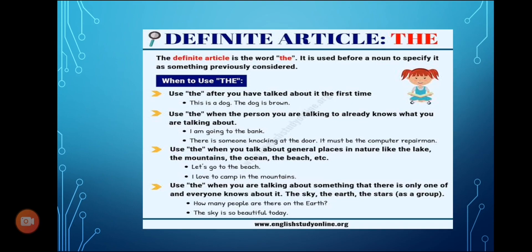Definite article: THE. The definite article is the word 'the.' It is used before a noun to specify it as something previously considered. Use THE after you have talked about it the first time. For example: 'This is a dog. The dog is brown.'